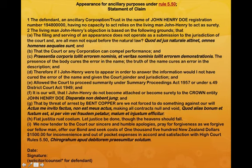The subordinate corporation trust in the name of John Henry Doe — put your birth certificate number as the registration number. Having no capacity to act, it relies on the living man John Henry to act as surety. The living man John Henry's objection is based on the following grounds: that the filing and serving of an appearance does not operate as a submission to the jurisdiction of the court. Are not all men equal before the law, before the natural law? And that no court or corporation can compel performance.